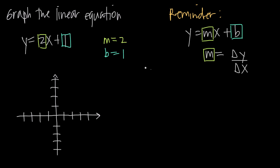So if we want to graph this, we take the y-intercept — we know b equals 1 — and come up to the point 1 along the y-axis. Now we look at the slope, which is 2. If the slope is not given to us as a fraction, we can turn it into one: 2 is the same as 2 over 1. So the change in y is 2 and the change in x is 1, meaning for every two units we go up along the y-axis, we go one unit in the positive direction along the x-axis. So we go up 2 for y and over 1 for x, and plot another point.